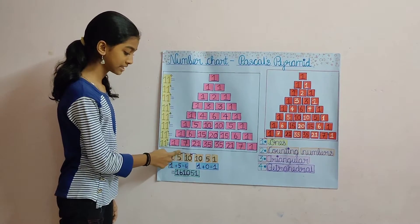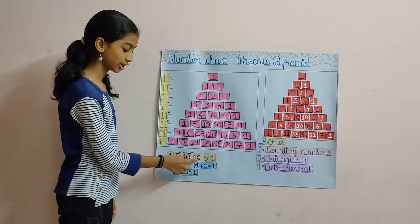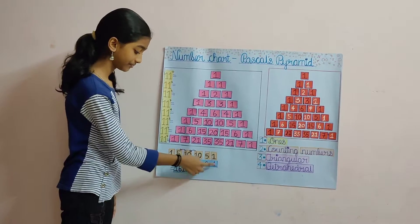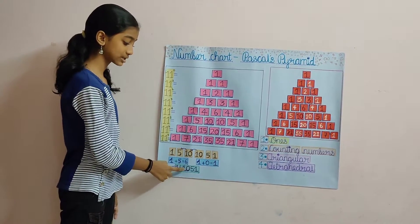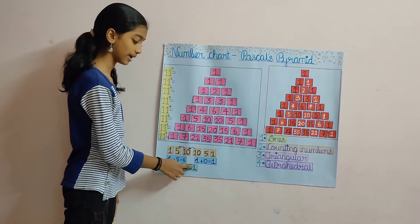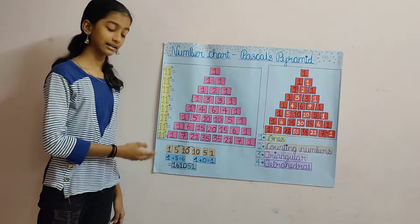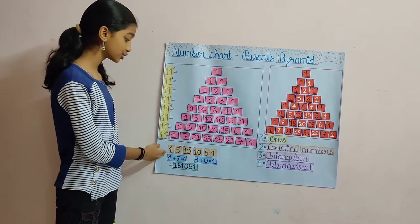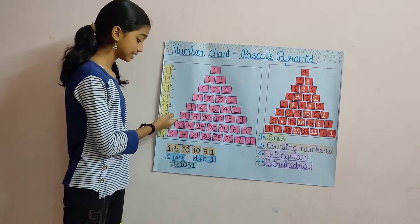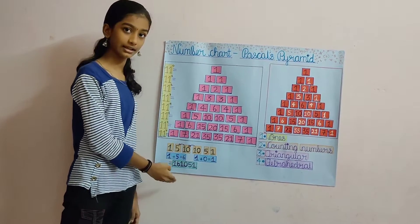We can change the two-digit numbers into single-digit numbers by adding like this: 1 plus 5 equals 6 and 1 plus 0 equals 1. I have got 1, 6, 1, 0, 5, 1 by adding like this. You can also change 11 to the power of 6 and 11 to the power of 7 in the same way.